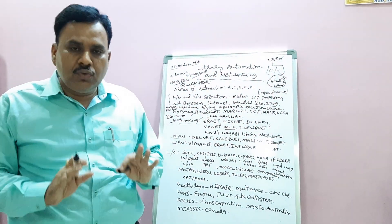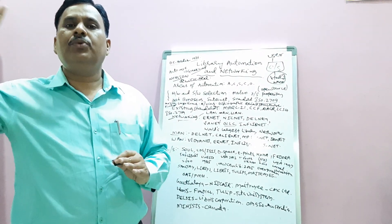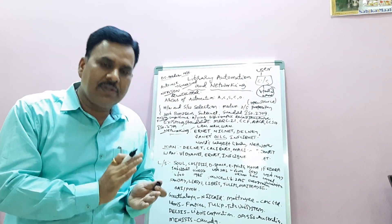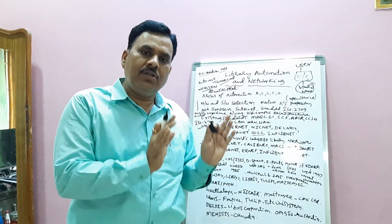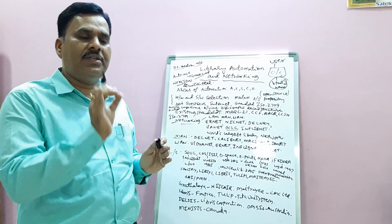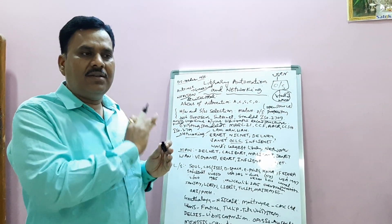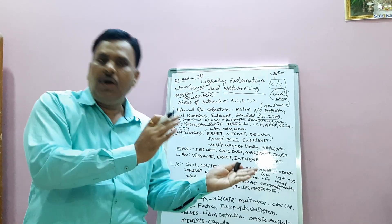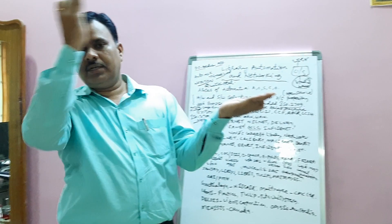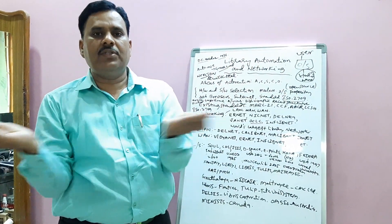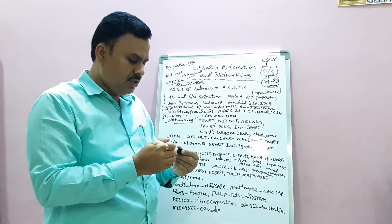Under Metropolitan Area Network, DELNET, CALIBNET, MALIBNET, and BONET are examples. Under Wide Area Network, VIDYANET, ELNET, COINNET, and JANET are examples. These networks are useful for sharing resources from one computer to another, transferring data from one user to another within a fraction of a second. Once you click enter, data is transmitted from one computer to another within fractions of seconds.